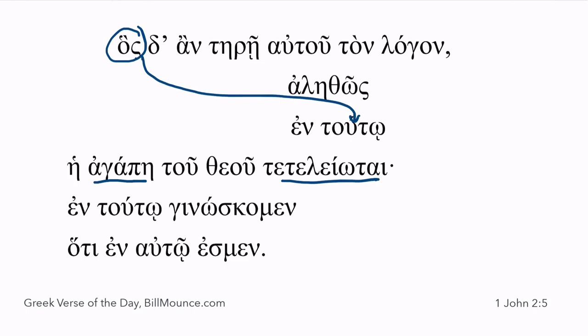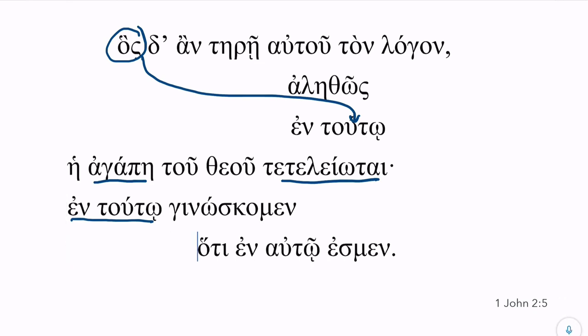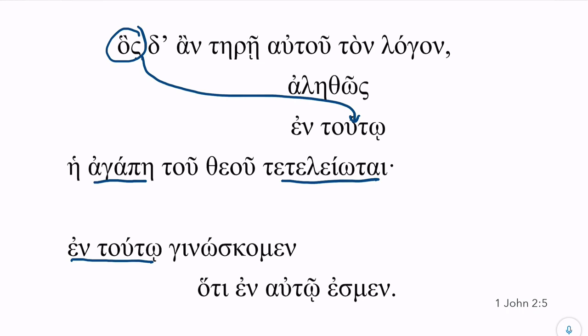The question is, what is this 'en tuto' referring to? 'In this we know' — well, we know what? We know that we are in him. I'm going to put another break here because it's really two different thoughts. They're related thoughts, but two different thoughts. What is the antecedent of 'tuto'? Remember, 'tuto' can point forward and can point backwards. In this particular case, 'tuto' is referring back to all of this. This is how we know — what do you mean 'this'? The person who keeps God's word, and in that person we know that the love of God has been made complete. And in that whole scenario, that's how we know that we are in him, that we're in relationship with him. So it's a little easier to see when you phrase it.